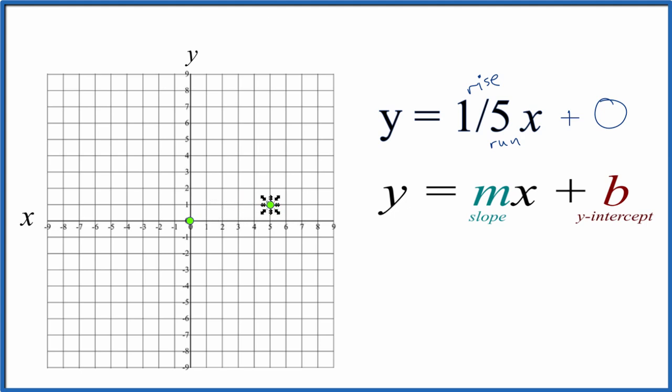And that's our second point. From there, we could go up 1 and go over 1, 2, 3, 4. And we're off the graph, but you can see that it's going to line up.